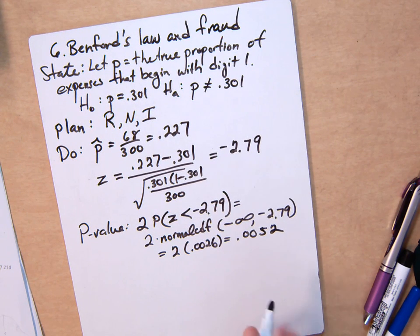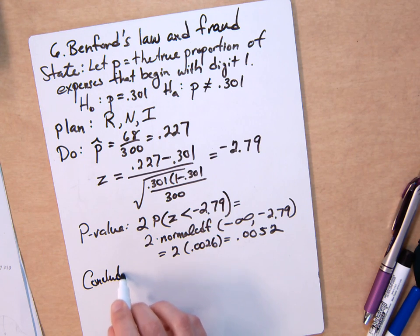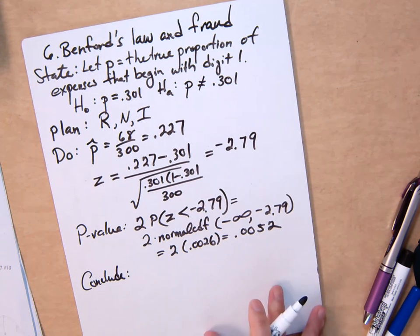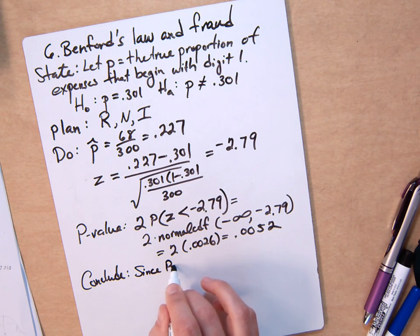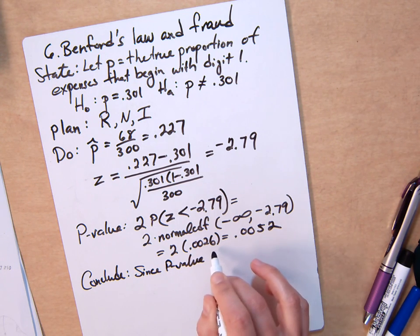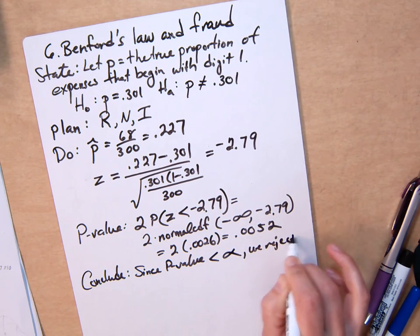There's quite a small chance, a half-percent chance, that we would get the result we did in our sample if H-naught were true. So we reject the null hypothesis. To conclude: since p-value is less than alpha, we reject H-naught.